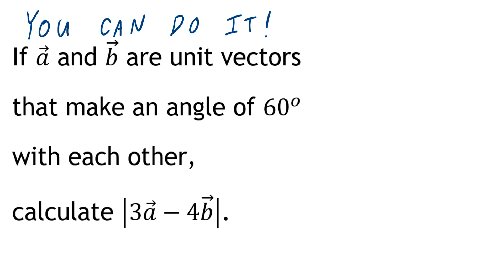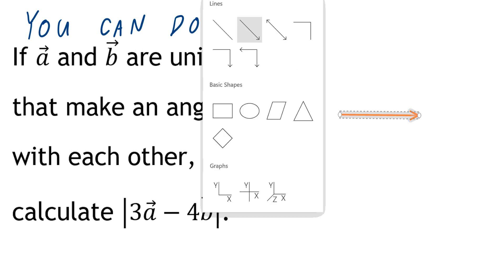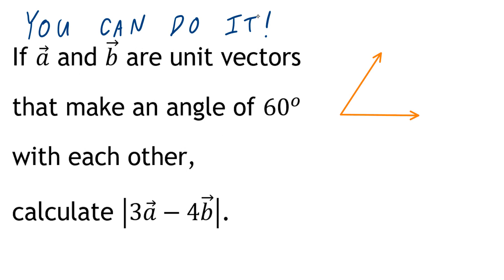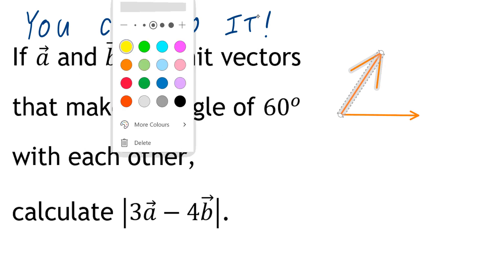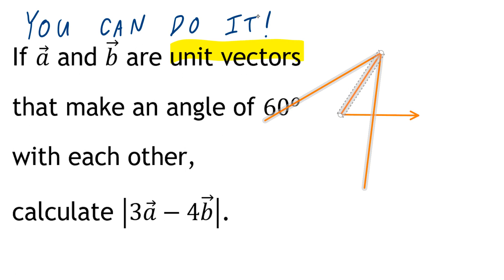Step number 1, draw a diagram. There are two vectors, one of them is going to be vector A, and the second vector is going to be vector B. Be mindful that in the given, these are not any vector, but they're unit vectors.